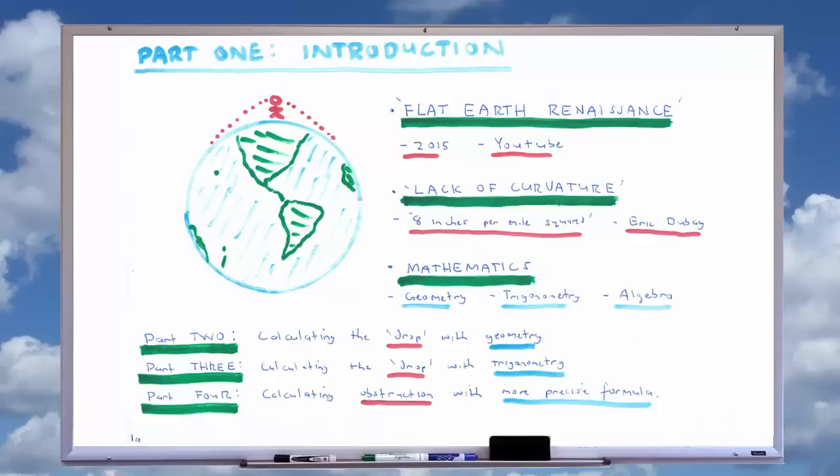This 8 inches times the mile squared formula has been largely popularized by leading flat earther Eric Dubé, whose book The Flat Earth Conspiracy and accompanying documentary of the same name has played a significant role in the recent and sudden rise in interest in the flat earth theory. It should be made clear that Dubé does not claim to have devised the formula himself, nor does he take credit for popularizing it.